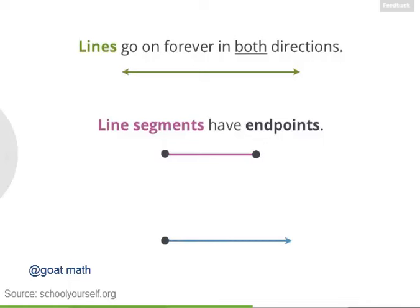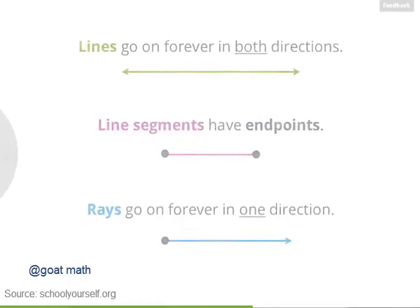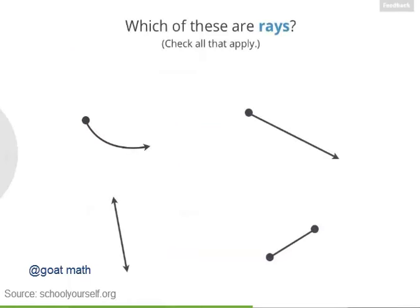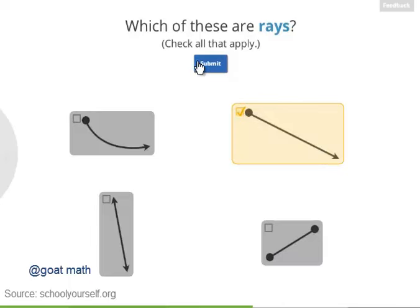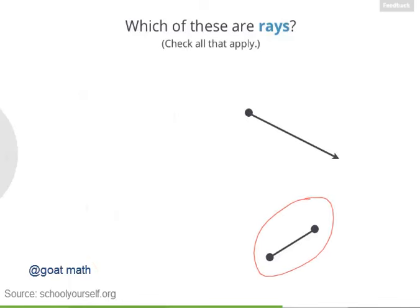Which of these are line segments? These two are line segments — they're both straight paths with endpoints. So lines go on forever in both directions, and line segments have two endpoints. But what do you call it when you go on forever in one direction but not the other? These are called rays, and they have exactly one endpoint. Remember that like lines and line segments, rays are straight. This path is curved, that is a line, and that is a line segment — meaning the remaining one was the only ray.